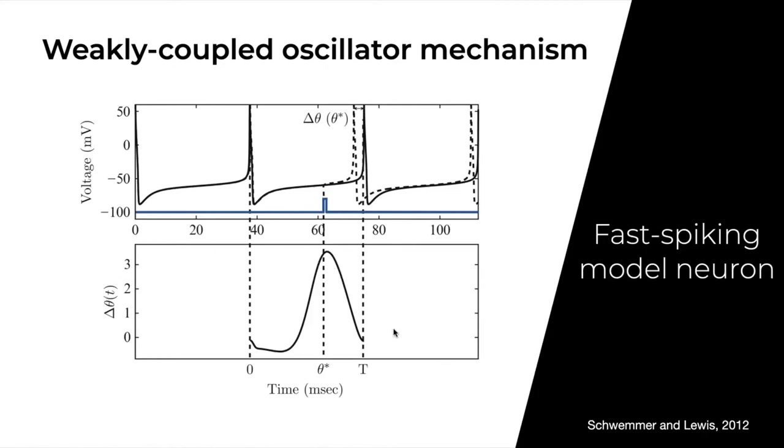If you inject this current at all of the phases of the cycle, you can find something called the phase response curve. If we look at this 60 millisecond injected stimulus, we'd get almost the largest phase response, in this case a phase advance. If we injected the stimulus at millisecond 40, there would be almost no change in the phase. We can derive this phase response curve experimentally and further use it to derive a weakly coupled oscillator model by phase reduction.